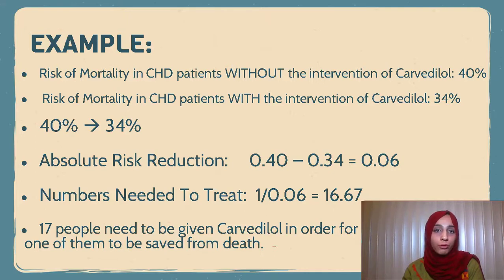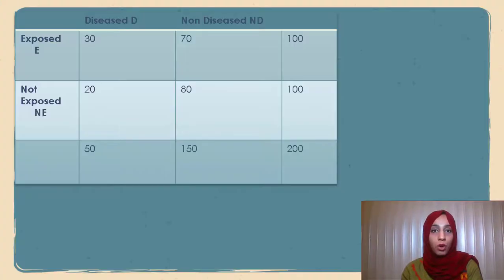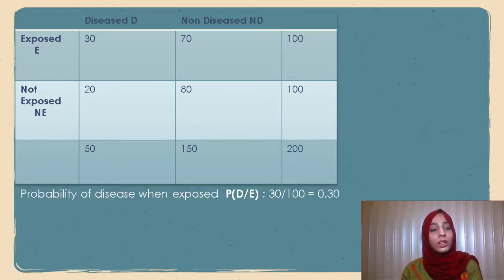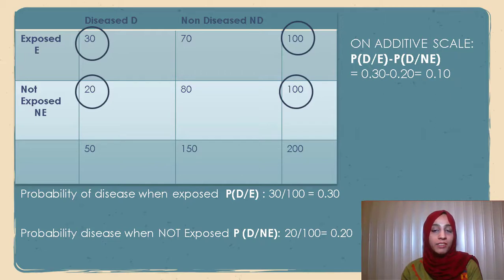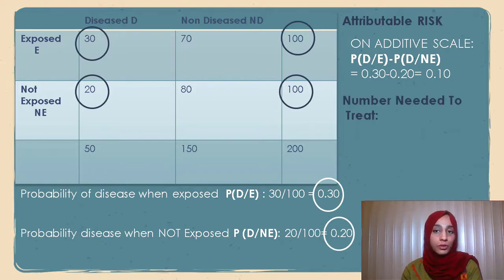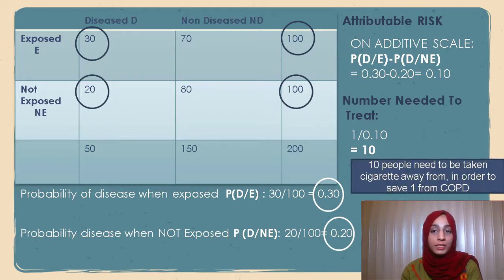This number is important for a physician to gauge the effectiveness of the intervention — in this case, beta blocker carvedilol. Applying this formula to the smoking and COPD example: the probability of COPD when someone smokes is 0.3, and when they don't smoke is 0.2. The attributable risk on the additive scale is 0.1. Number needed to treat is 1 divided by 0.1, which is 10. This means 10 people need to stop smoking in order to save one from COPD.